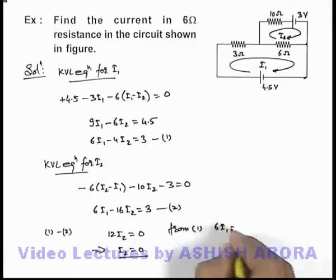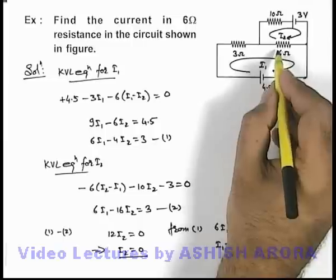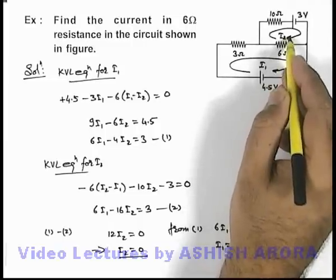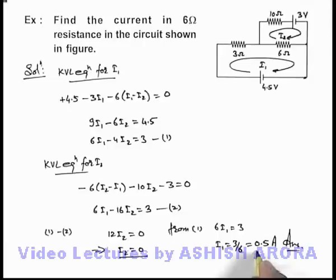If i2 is 0 then from equation 1 we can write 6i1 is equal to 3, this implies i1 is equal to 3 by 6, this is 0.5 ampere that'll be the answer to this problem. Because through this 6 ohm resistance i2 is zero so only i1 is the current which is flowing, which we are getting 0.5 ampere.